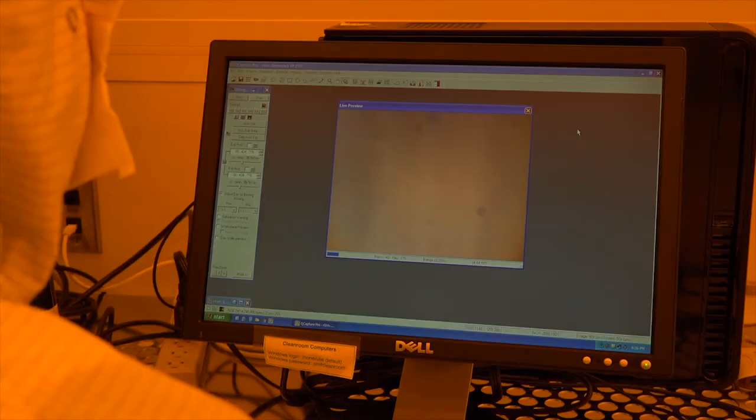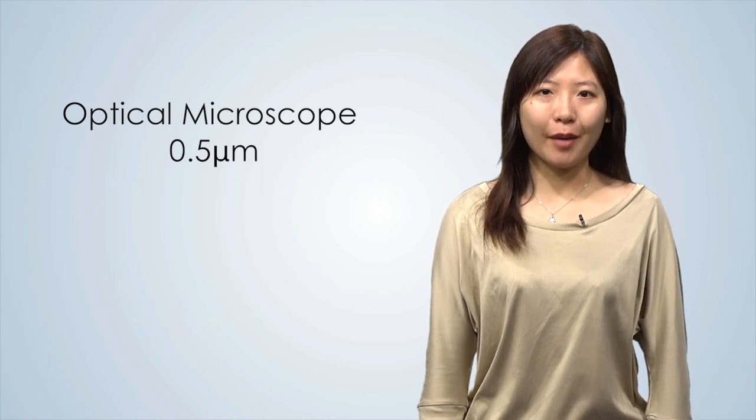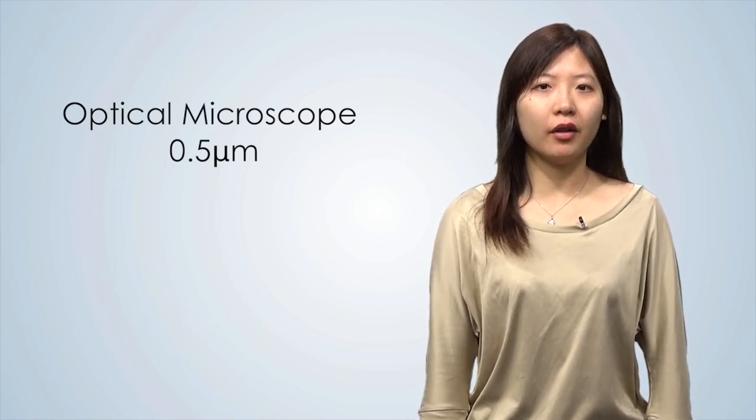Hmm, I'm having trouble seeing it. Our features are so small that an optical microscope cannot produce a clear image. An optical microscope can see objects down to about a half of a micrometer.